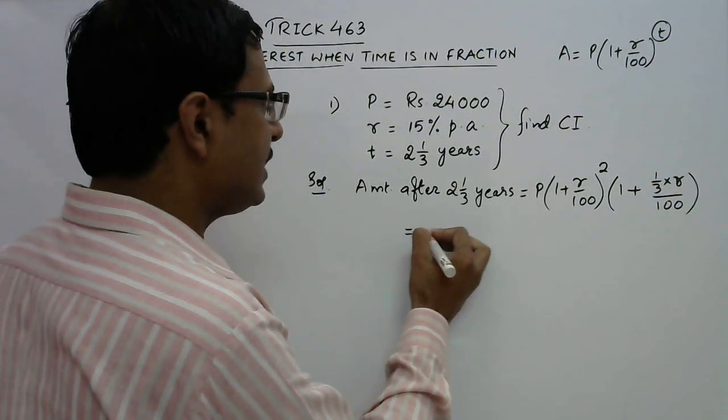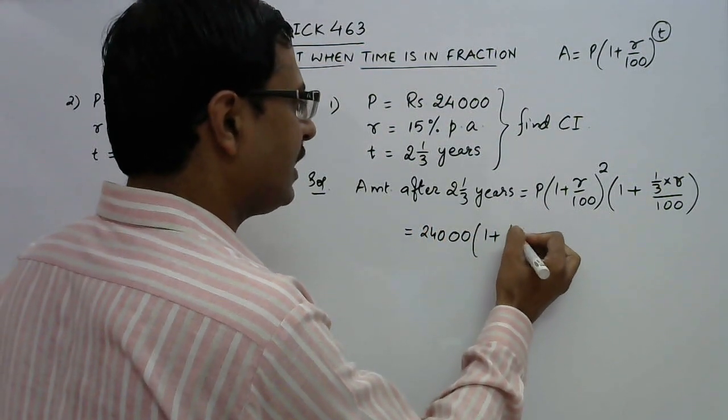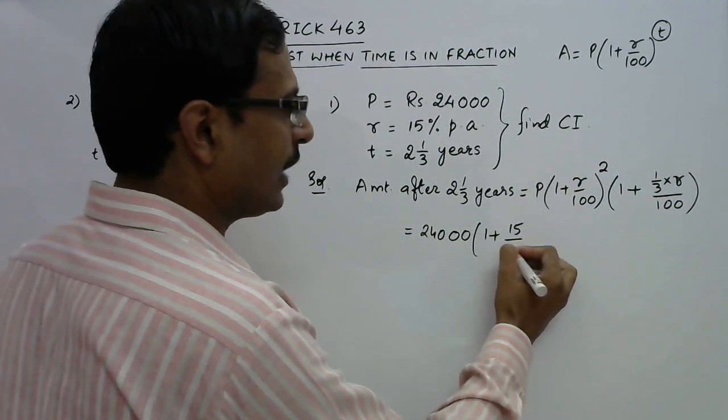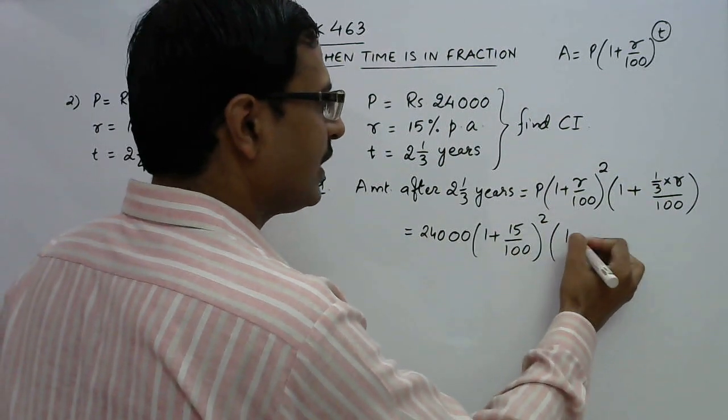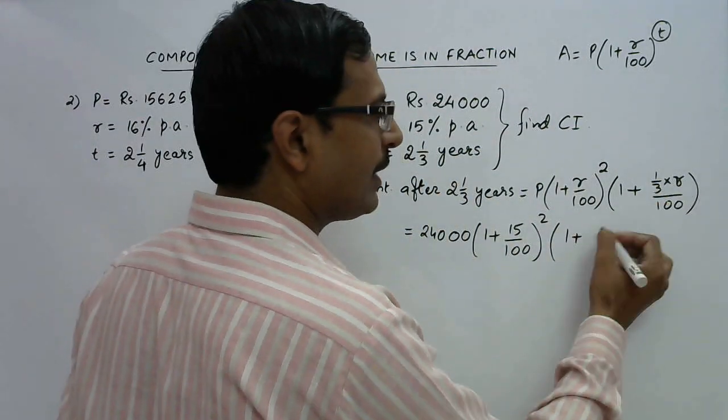Now let us substitute the values here. P is 24000, 1 plus r is 15 percent, obviously it is per annum compounded annually, power 2 and 1 plus 1 third of r. What is r? r is 15, so 15 by 3 is 5.